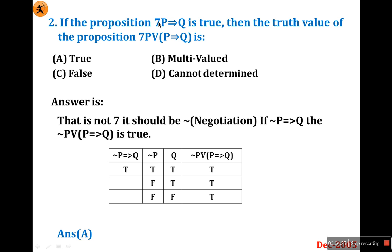If 7 is considered as a negation, the answer is option A: true. If it is actually a 7, then the answer is B: cannot be determined. But according to me, this is option A — true.